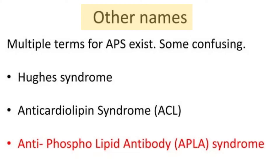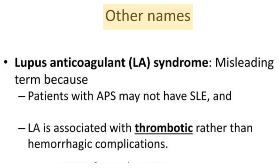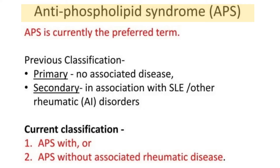There are many terms used for antiphospholipid syndrome, including Hughes syndrome, anticardiolipin syndrome, and lupus anticoagulant syndrome. However, the term lupus anticoagulant syndrome is misleading because antiphospholipid syndrome may not involve SLE, and it is associated with thrombosis rather than hemorrhagic complications. Antiphospholipid syndrome is currently the preferred term, and it is classified as occurring with or without associated autoimmune rheumatic diseases.